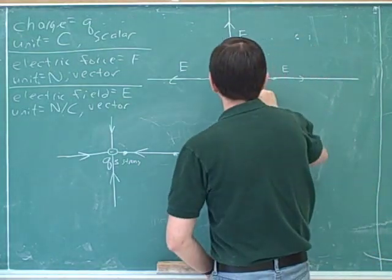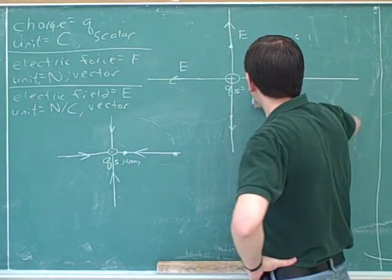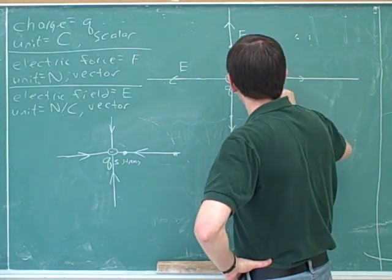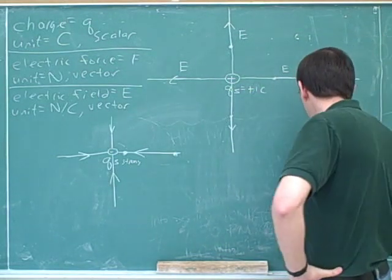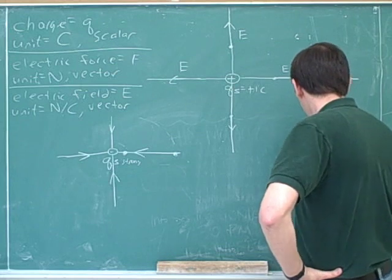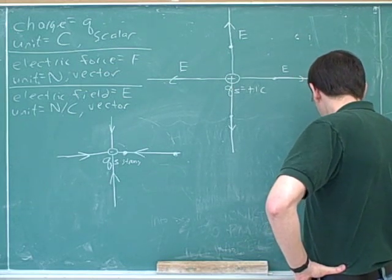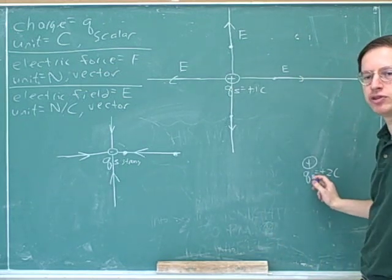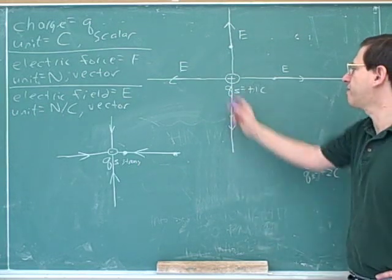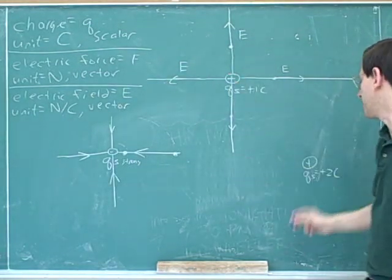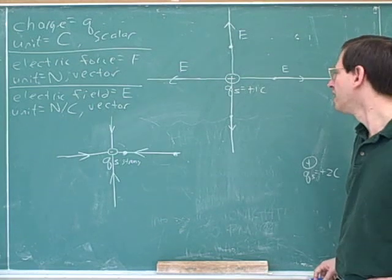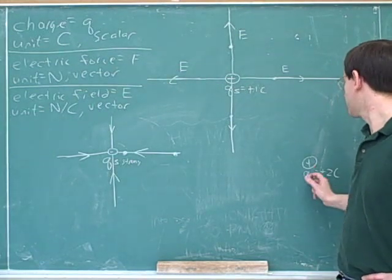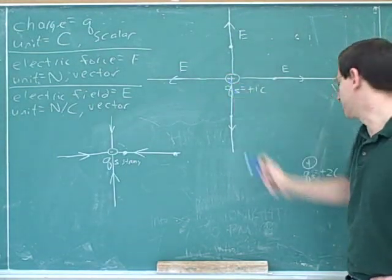For example, suppose that this represented a positive one Coulomb test charge, and now let's say that this represents a positive two Coulomb test charge. If I decided to draw four electric field lines for the one Coulomb charge, how many electric field lines should I draw for the two Coulomb charge? Eight — that's what it means to be proportional. If we double the charge, we should double the number of electric field lines that we draw.